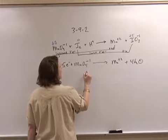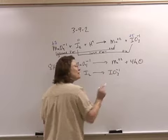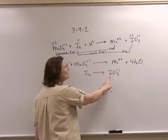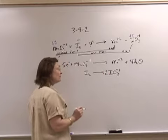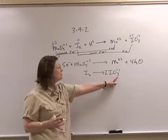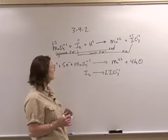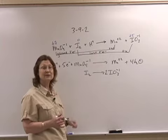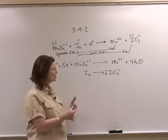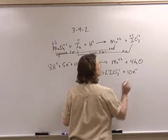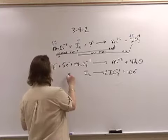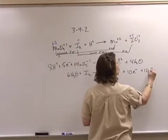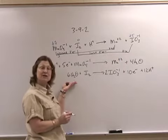Then I pull out the next bracket: iodine goes to iodate. It's extremely important to notice that there are 2 atoms of iodine here and only 1 atom of iodine here, so I must put a coefficient in front to get those 2 iodine atoms. This changes the number of oxygens. I lost not just 5 electrons — because that is for 1 atom — I lost 10 total electrons. Losers are on the right, so we add 10 electrons to balance the charges. Then I need 6 waters to get 6 oxygens, and when I add the 6 waters I need 12 hydrogen ions. That half-reaction is also balanced.